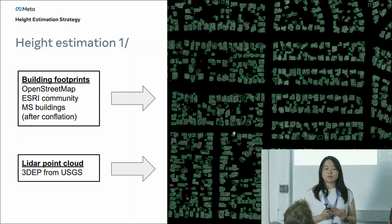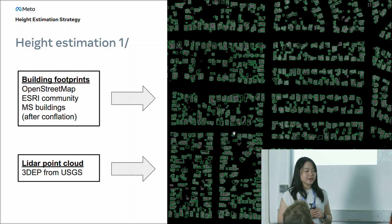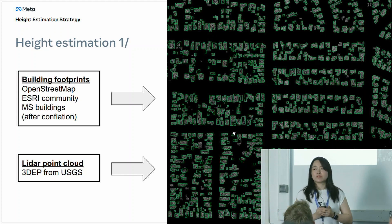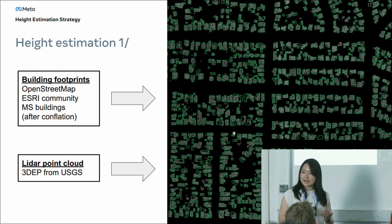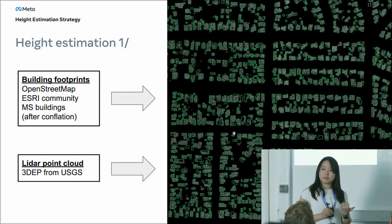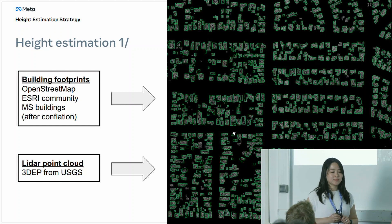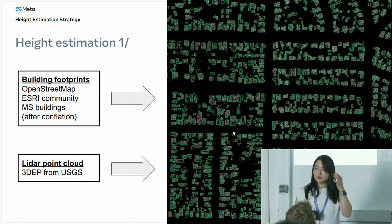How do we estimate the height? Simply speaking, we have input data. To estimate building height, there are two things you need: the building footprint and the LiDAR point cloud from USGS. For building footprints, we have three resources: OpenStreetMap, ESRI community building data (mostly from city GIS departments), and Microsoft machine learning buildings. We conflate these buildings to choose the best footprint over the three resources, then overlay the LiDAR point cloud with the building footprint and start our height estimation process.